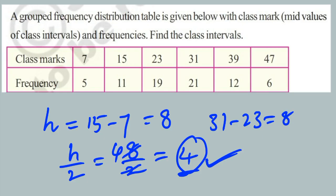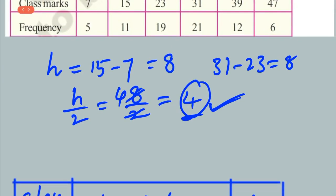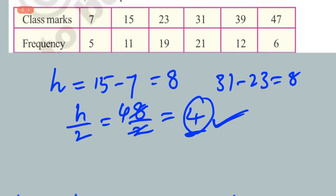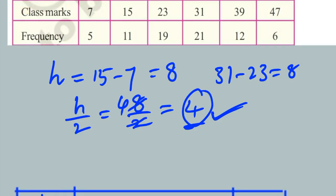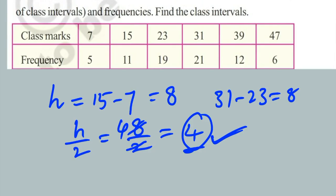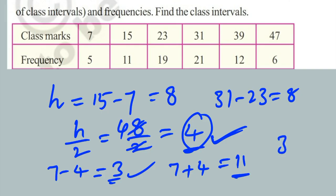After finding h by 2, we go on to find the class intervals. Each class interval has a lower boundary and an upper boundary. The first class mark is 7, which lies between its lower and upper boundaries. To get the lower boundary, subtract 4 from 7 to get 3. To get the upper boundary, add 4 to 7 to get 11. So 3 to 11 is the first class interval.